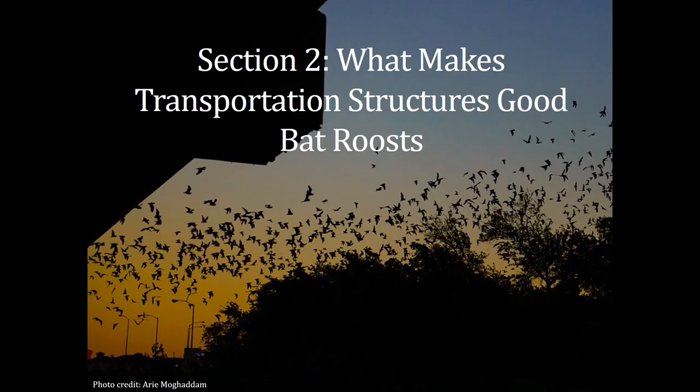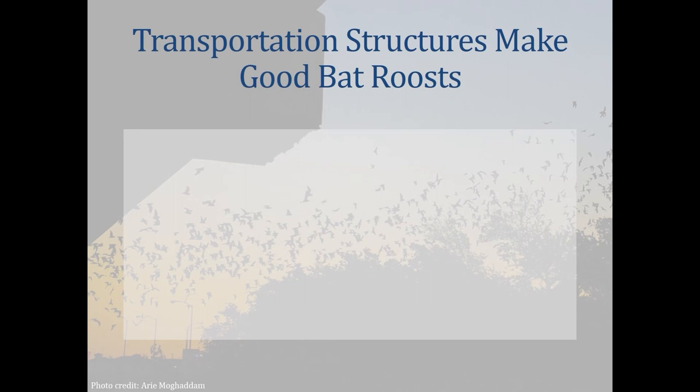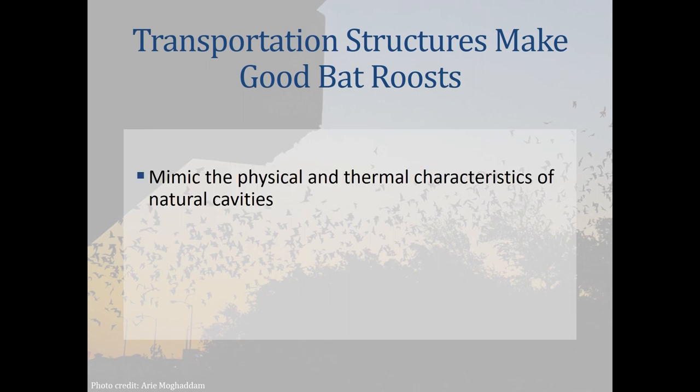Section 2: What makes transportation structures good bat roosts? Of the 47 bat species that live in the US, 41 have been documented or are suspected to use transportation infrastructure for roosting — 87 percent of all US bat species. Transportation structures make good bat roosts because they contain cracks and crevices that mimic the physical and thermal characteristics of natural cavities.